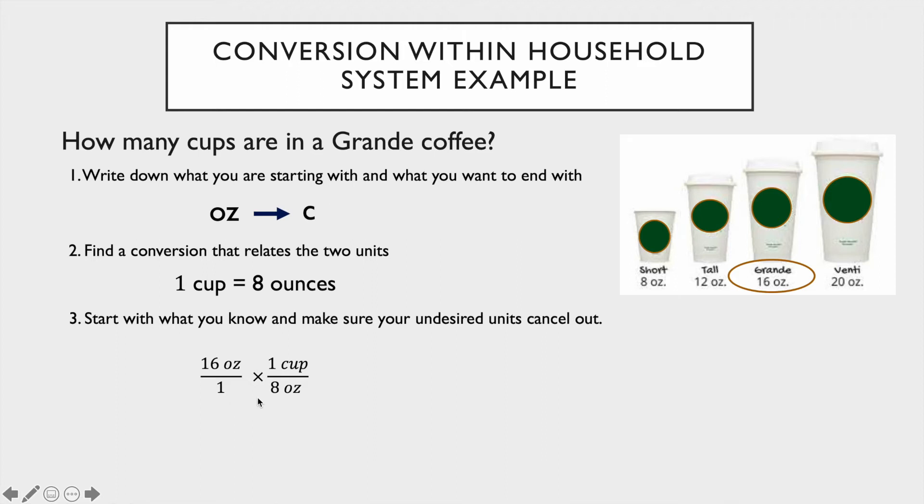Now we need to multiply it by our conversion. We can see that one cup equals eight ounces. We want to make that our fraction, and to cancel out a unit in the top, the matching unit must go in the bottom.